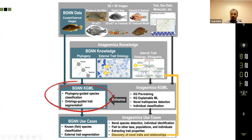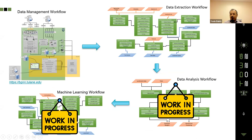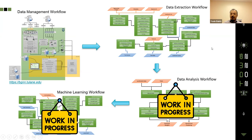In this pipeline, I'm going to mention the ontology-guided trait segmentation and extraction workflow. We have four different workflows. The first is data management, which we have already published and presented at a previous TDWG conference. Now we are presenting the data extraction workflow. It will be followed by data analysis and machine learning workflows.